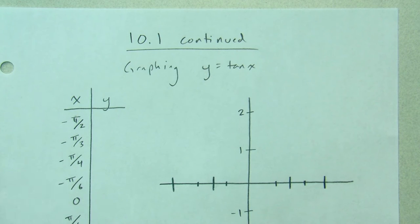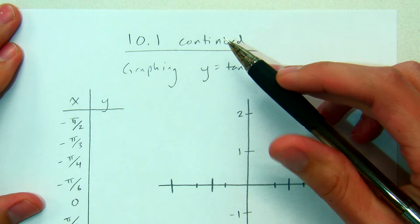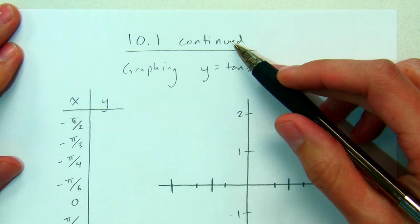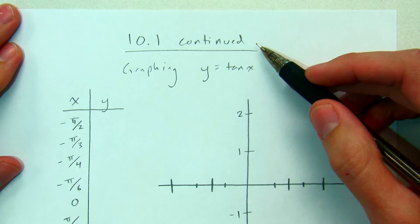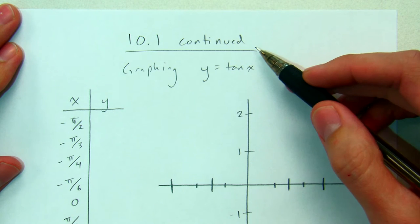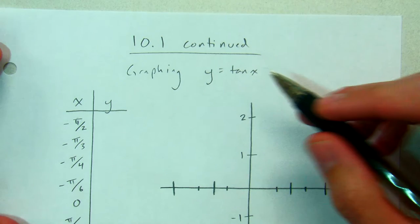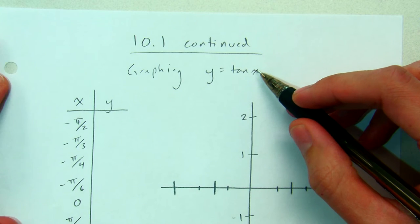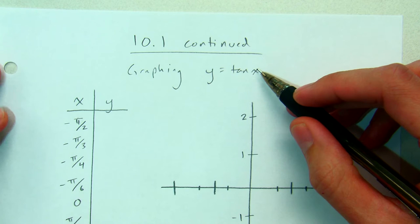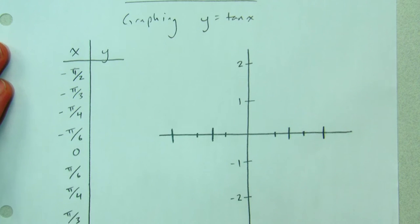Hey guys, so in class we started section 10.1, graphing trig functions, and we graphed sine x and cosine x. In this video we're going to continue with tangent x, and we're going to start the same way we did in class — by basically plugging in points.